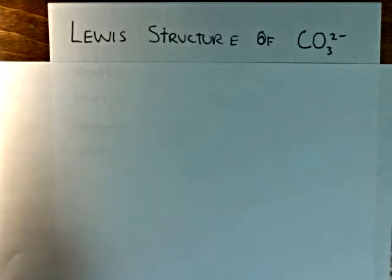In this video I want to talk about how we would draw the Lewis structure for the carbonate anion. First thing to note is that carbon is in the second period of the periodic table, and therefore we know that it's not going to exhibit an expanded octet. So we'll have to use our standard Lewis calculations.